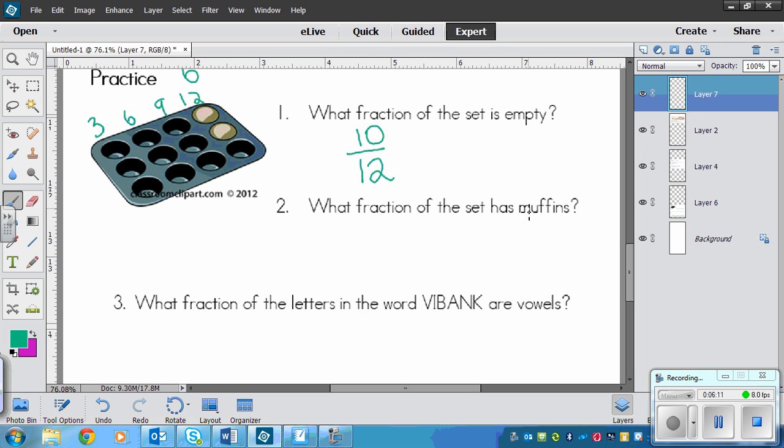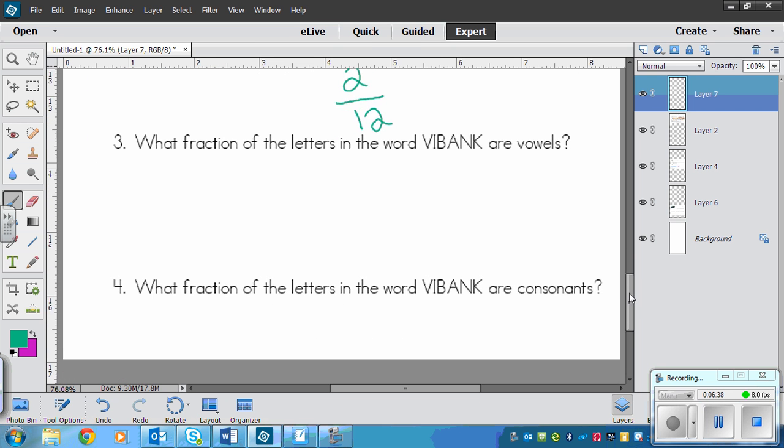And then this one wants to know the opposite: what fraction of the set has muffins? It's going to be out of 12 again because it's the same set, but now it's the opposite information. It's right here, these two muffins. Remember, I could find this too because I know that there's only an option of empty or has muffins. I know empty as 10, so I could subtract 10 from 12 to get two.